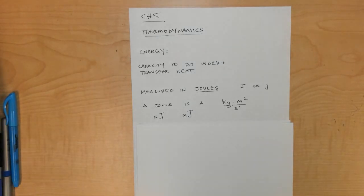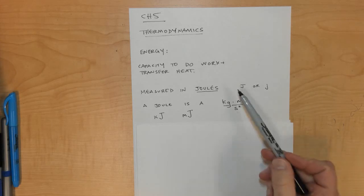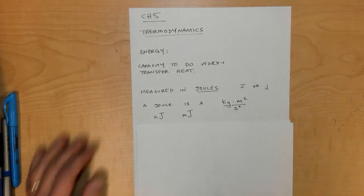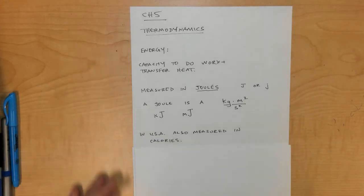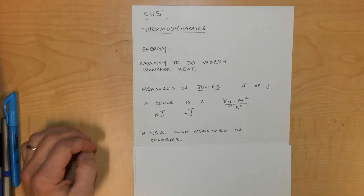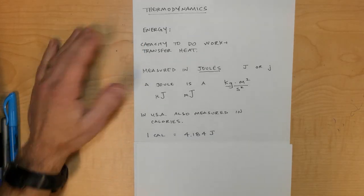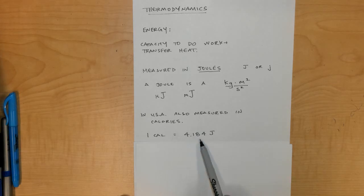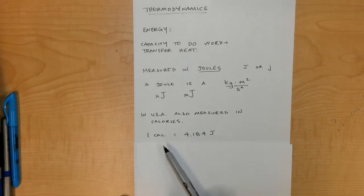In the United States we also measure energy in something called calories, like the calories on the side of a cereal box. One calorie is equal to 4.184 joules. That's the normal calorie, written with a small letter c.